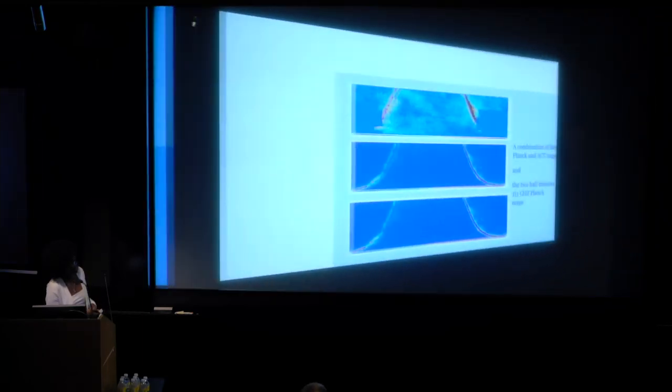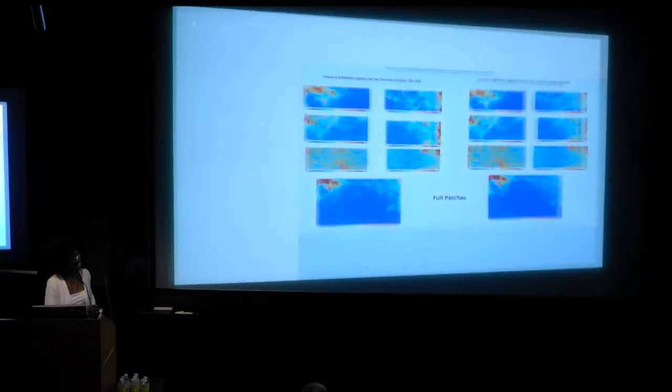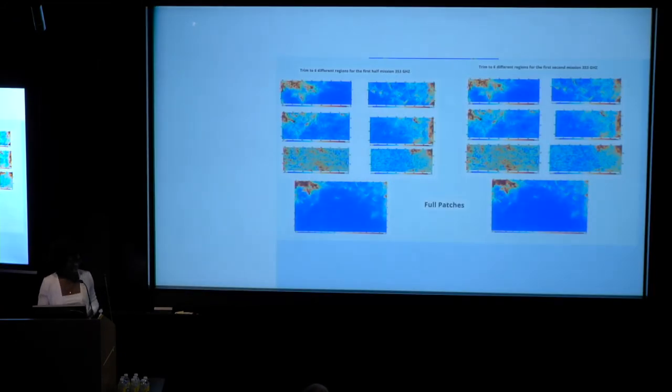And then we pretty much combine the first part and the second part together. We use the combination map of the Planck and ACT map, and we use the two half mission Planck maps at 250 gigahertz. And then we did the same thing. I trimmed them down into six different patches, and then I did the full one that encompasses all of the six areas.